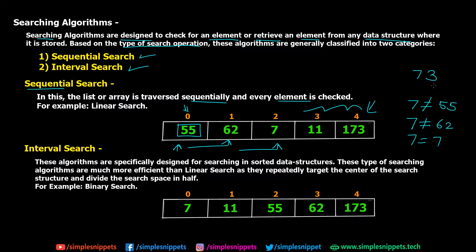Sequential search is not really efficient because as the number of elements in the array increases, the iterations will also increase. If we have an array of 100 elements and the element we want is at the end, we will have to traverse 99 times. So it becomes time-consuming as elements increase and it's not really used all the time. The example of sequential search is actually linear search, which we are going to look at today.